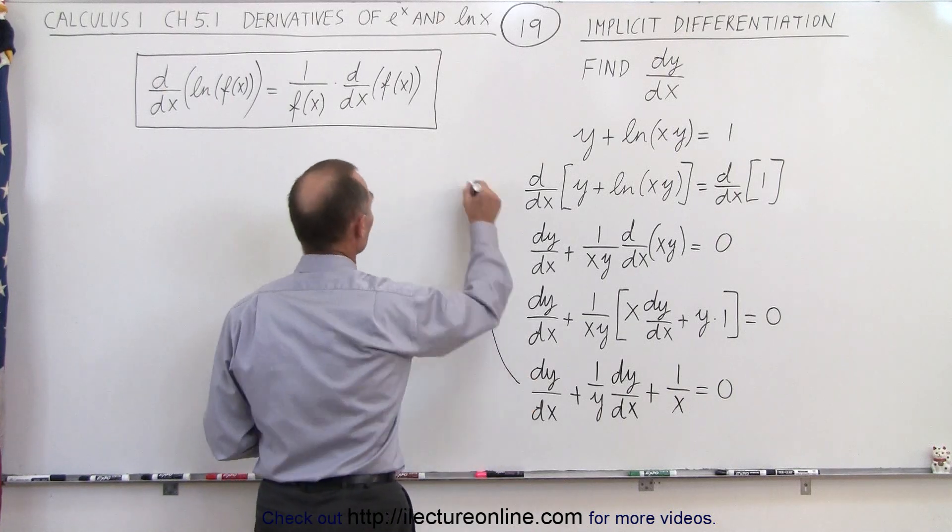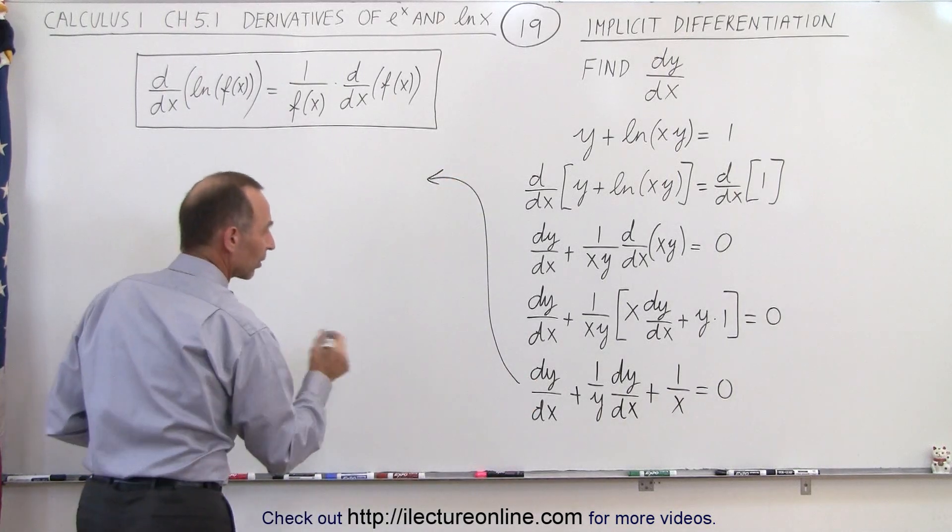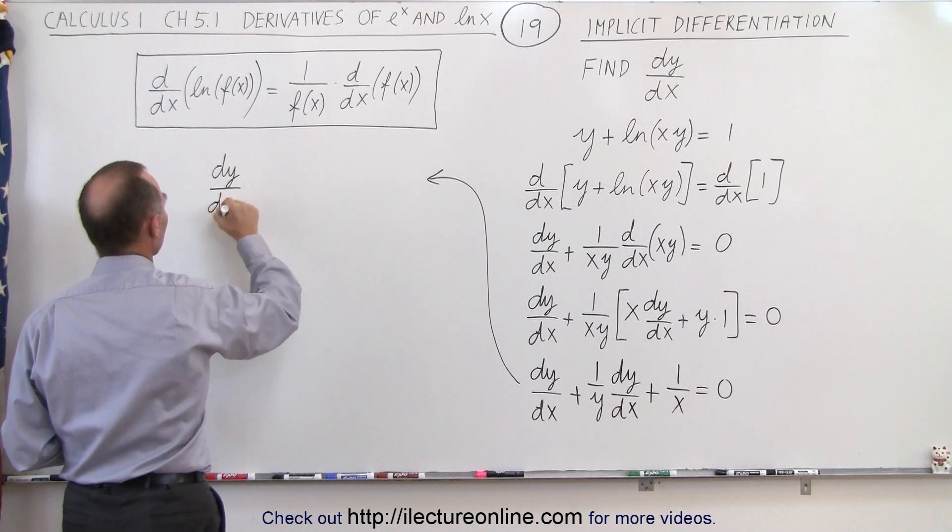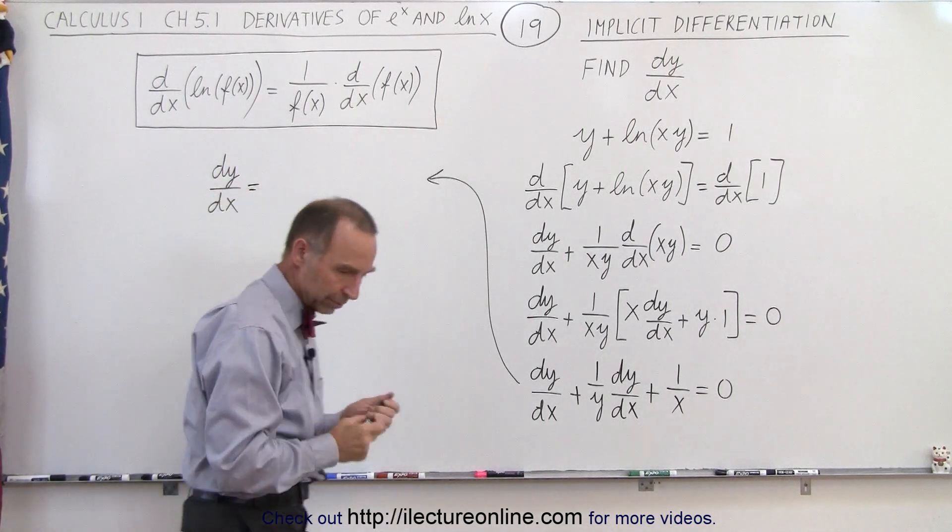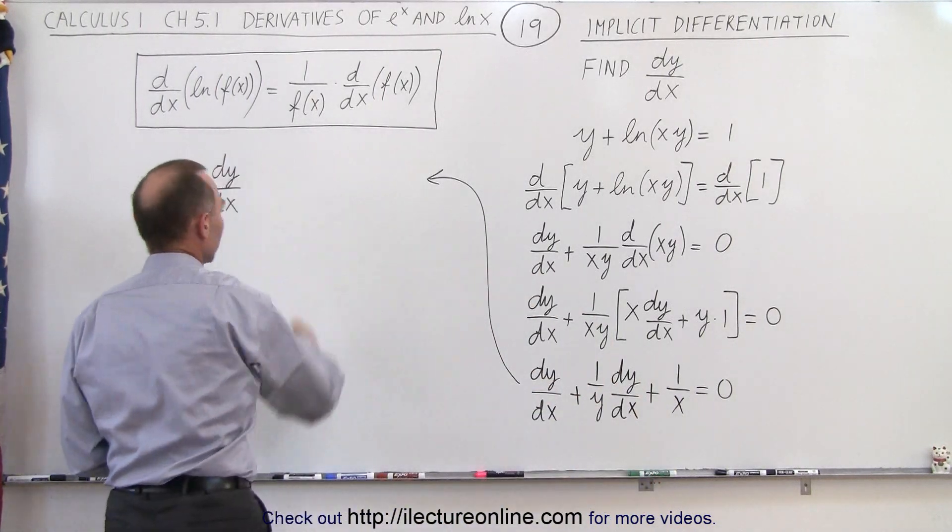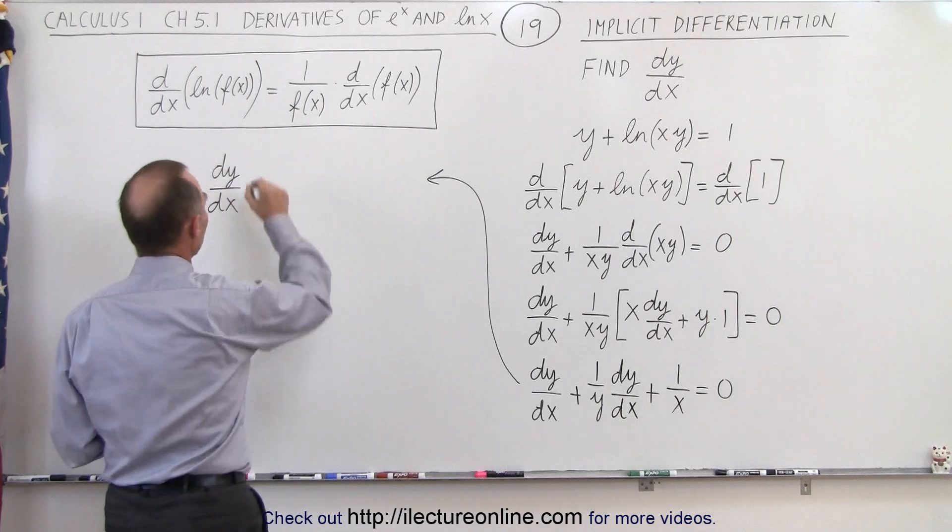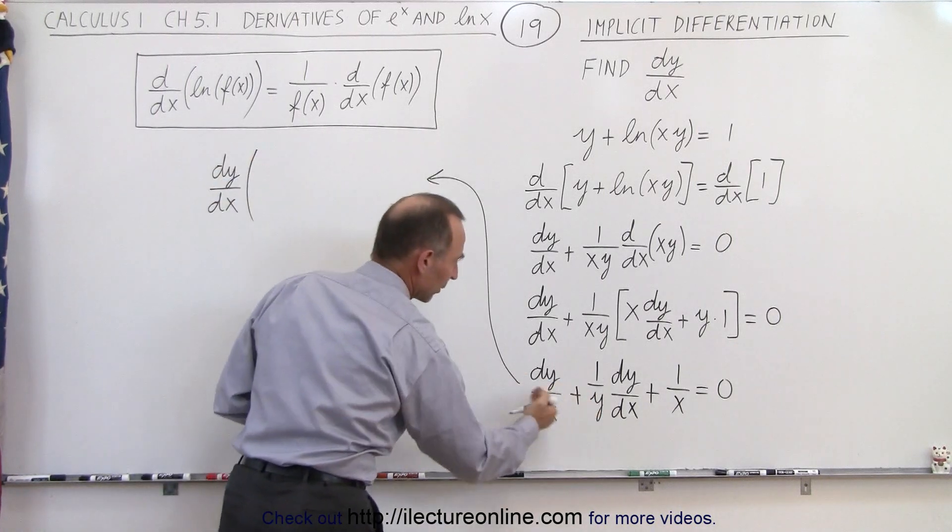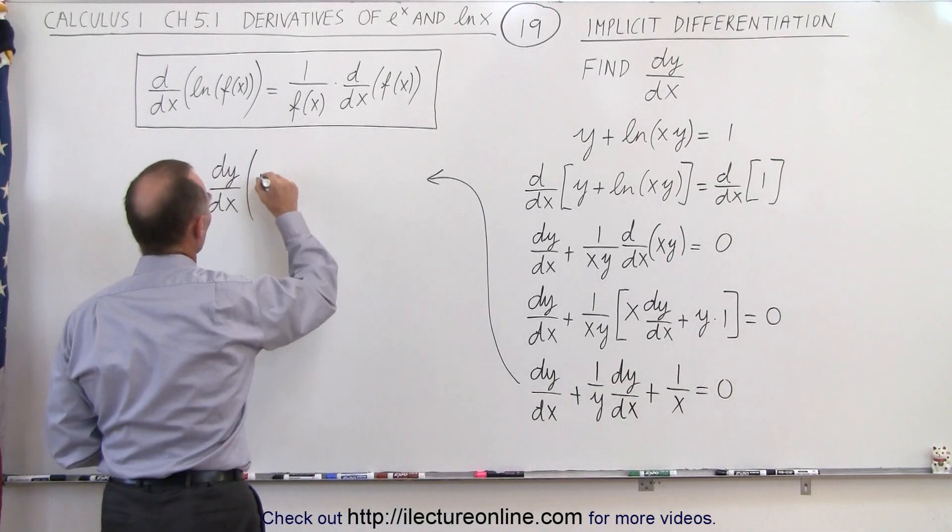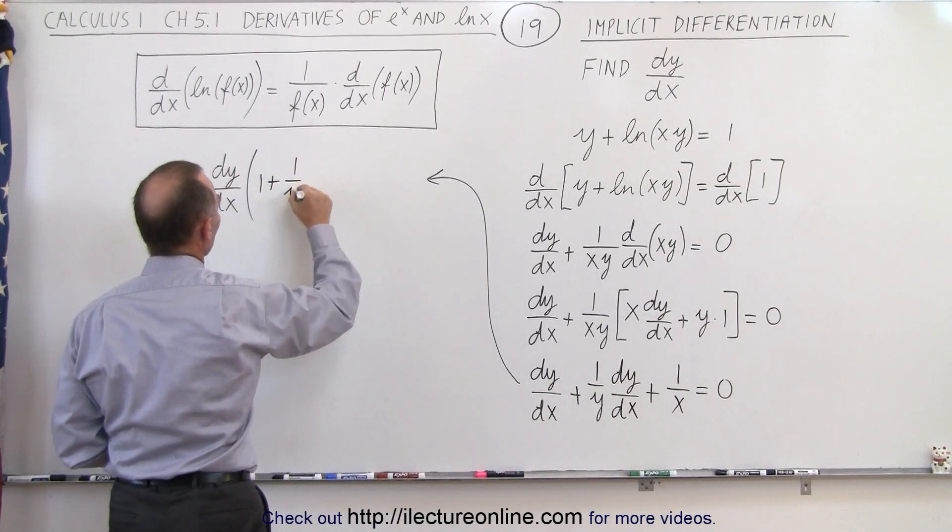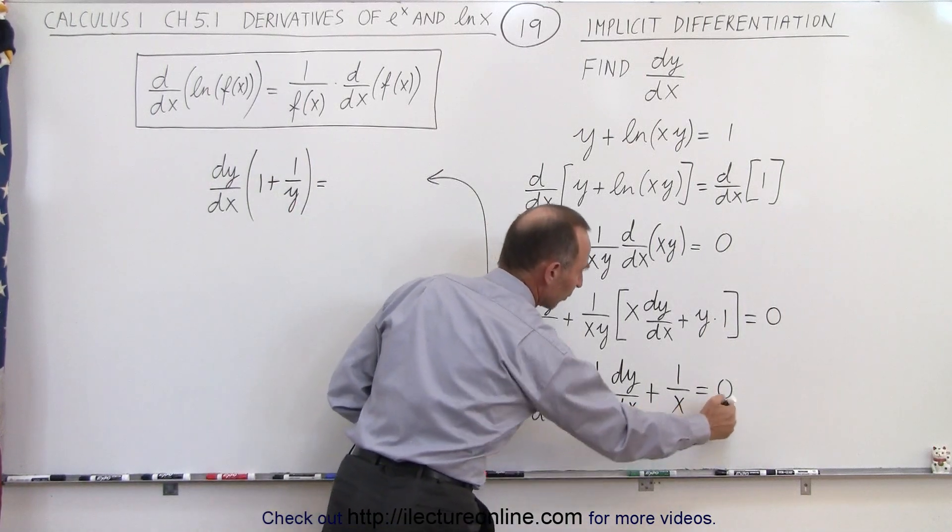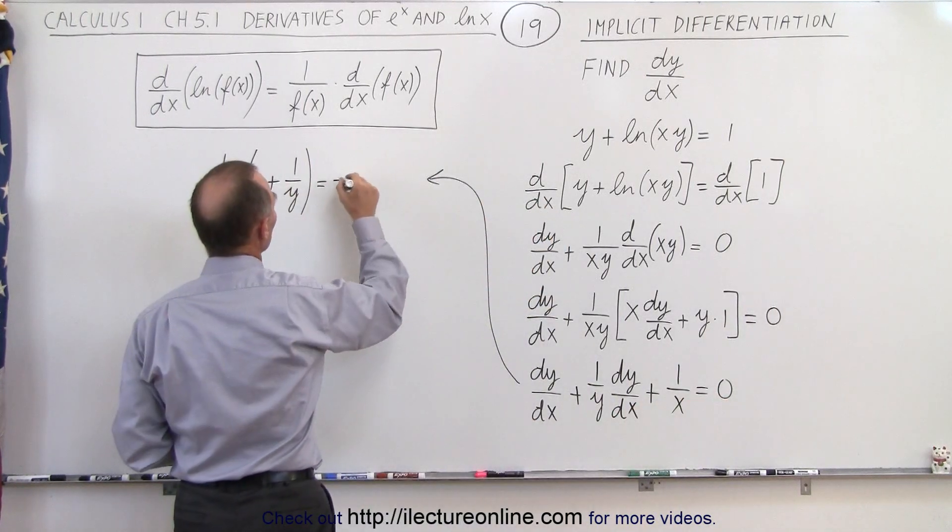So let's do that next. So let's come over here. So on the left side we end up with dy/dx times - let's get rid of that equal sign, so here we have times. When we factor out dy/dx from these two terms, we end up with 1 plus 1 over y. And that is equal to, because now we take the 1 over x and move to the right side, it becomes minus 1 over x.